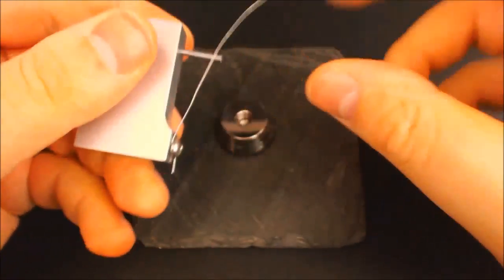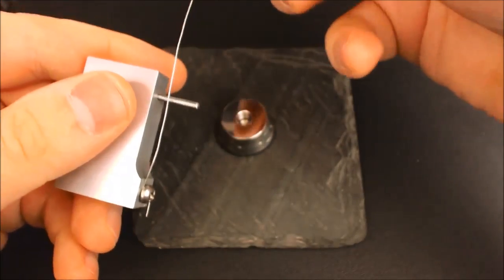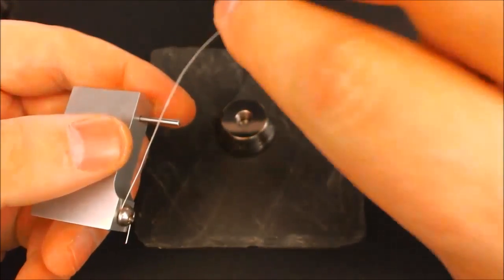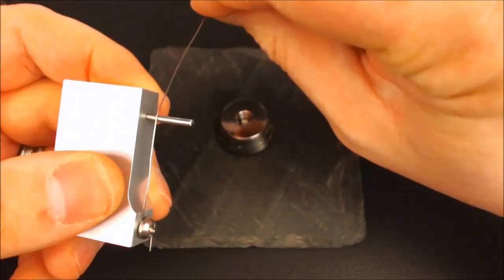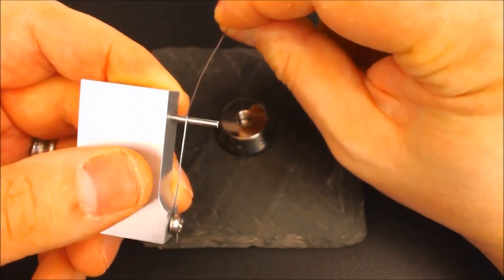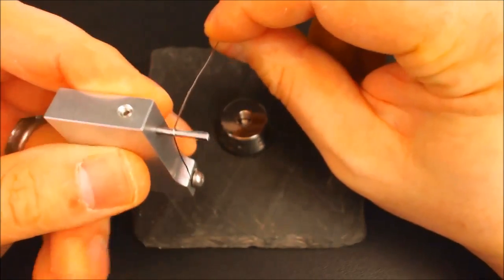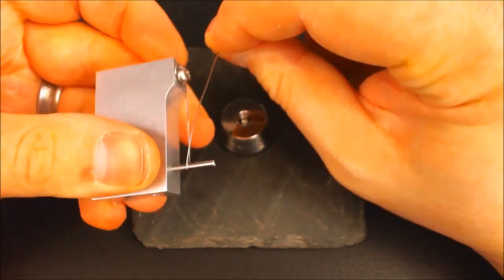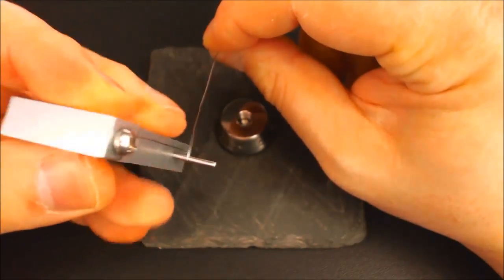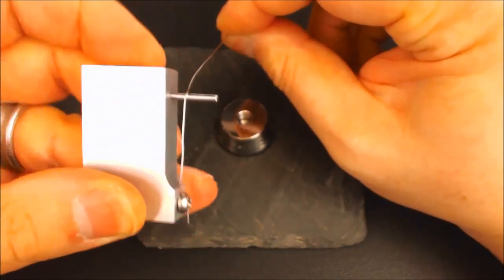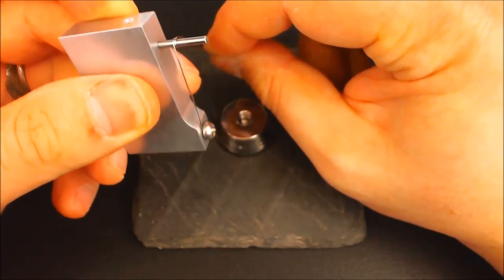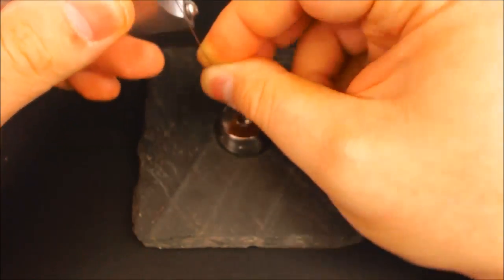I'm going to grab my other end of the wire here, and I am simply going to begin turning the micro coil jig. I'm making sure that each coil is touching the next as I go around.